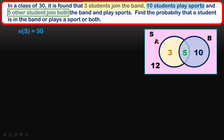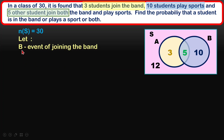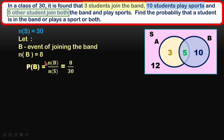According to the Venn diagram, we have 3 students who join the band only, 10 students who play sports, and 5 students in both. When students don't use a Venn diagram, they might consider just 3 students in the band. However, the Venn diagram shows the event of joining the band is actually 8 students total. So P(B) = 8 over 30.